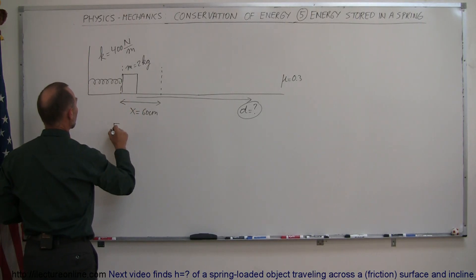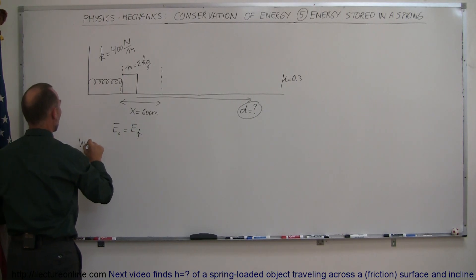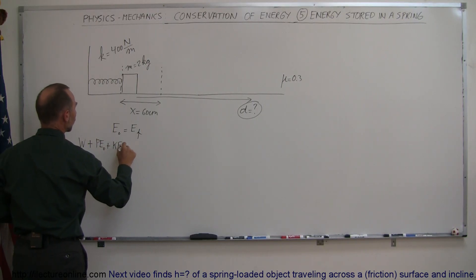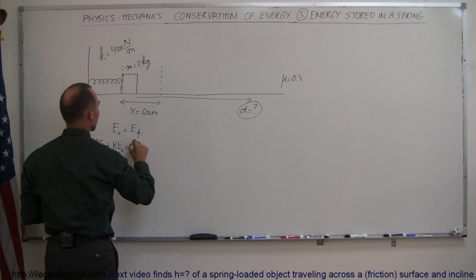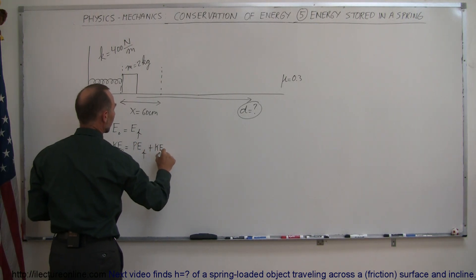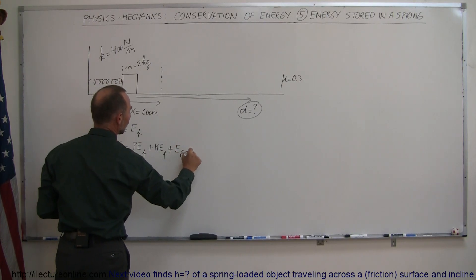So we can say energy initial equals energy final, which means that any work put into the system plus the potential energy initial plus the kinetic energy initial must equal the potential energy final plus the kinetic energy final plus any energy lost by overcoming friction.